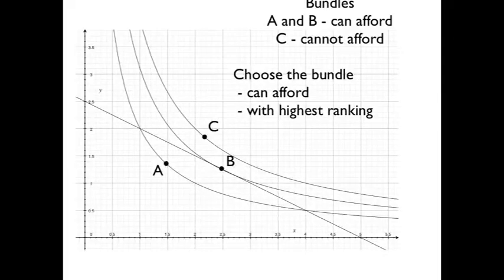So here's our example. We have a budget line, that's the straight line, and there's three indifference curves. Bundle C at the top, we can't get there. We can't afford it, it's outside our budget line. Bundle A we can afford, but there's a better bundle we can get that's higher up. So bundle B is the best bundle we can get that we can still afford.